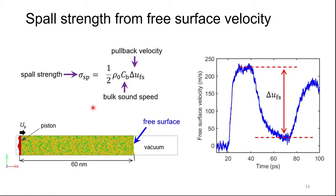First, we used the method commonly used in experiment, which is to compute the spall strength from free surface velocity histories. The spall strength in this method can be expressed using initial density rho-nought, bulk sound speed c_b, and the pullback velocity delta-u_f. This figure shows the free surface velocity versus time. The velocity is initially zero; once the shock wave reaches the surface, it suddenly increases to a certain value, then gradually decreases as the unloading wave reflects back, and then starts to increase again. This difference is called the pullback velocity.